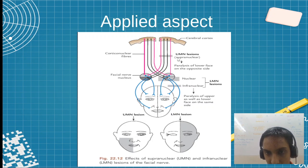UMN is supranuclear, LMN is infranuclear. Infra means lower, supra means above. That is why we have U.